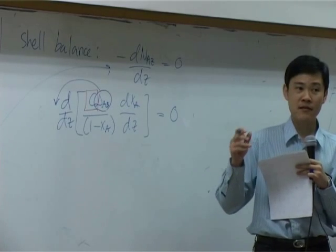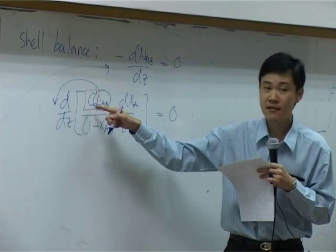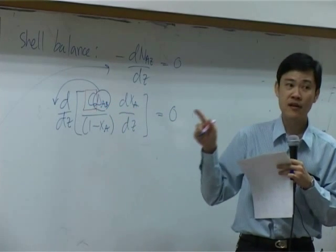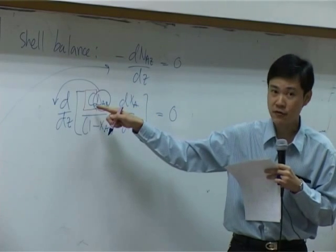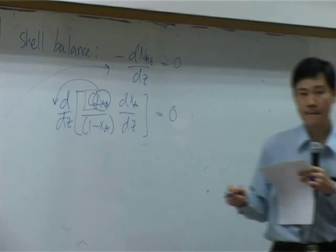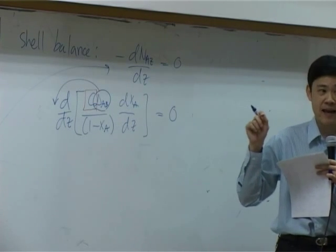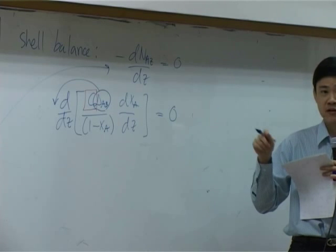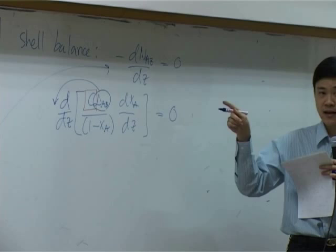But you need to be very careful here. c by definition is total concentration. This is not concentration of A, this is total concentration. That means it is number of moles of A and B combined per unit volume. Do you think it is constant?